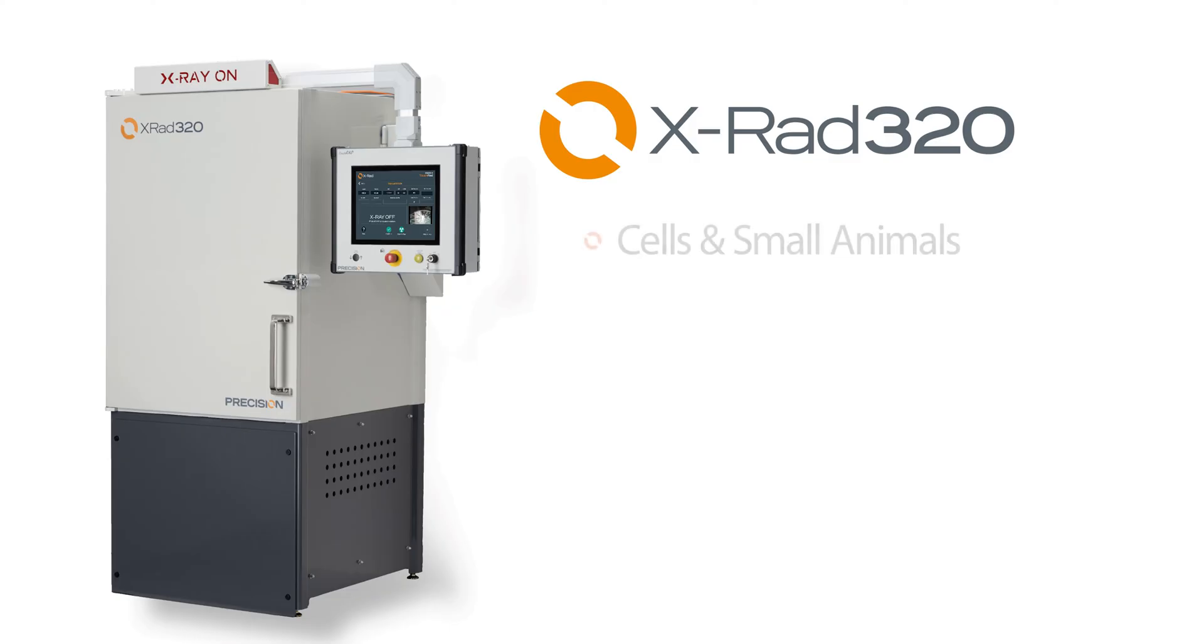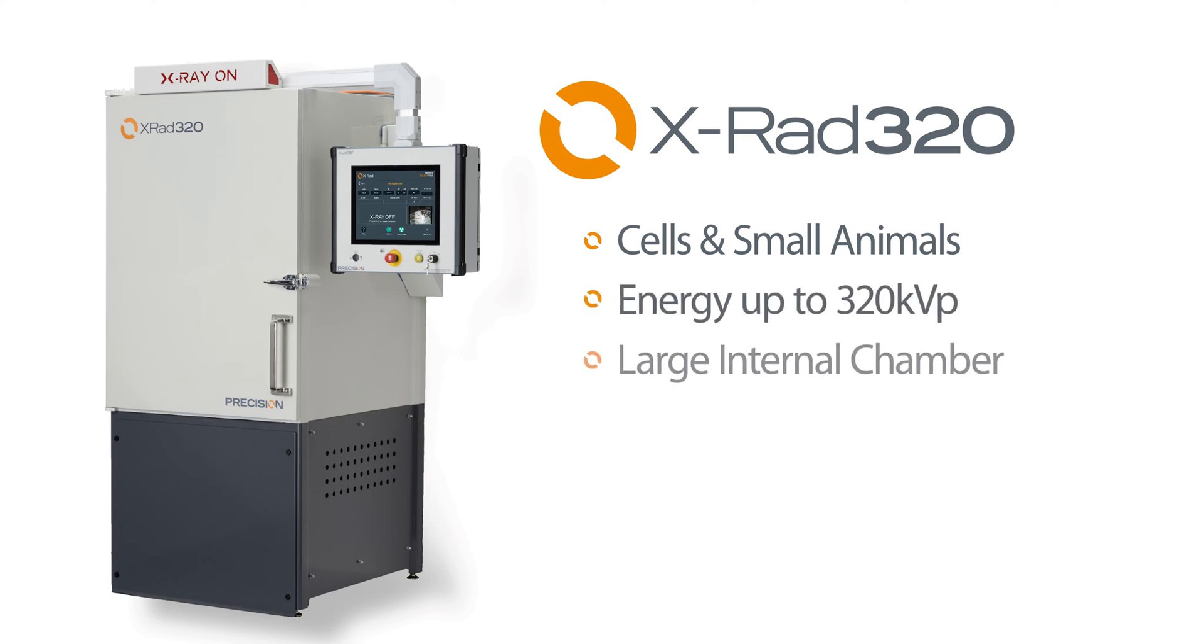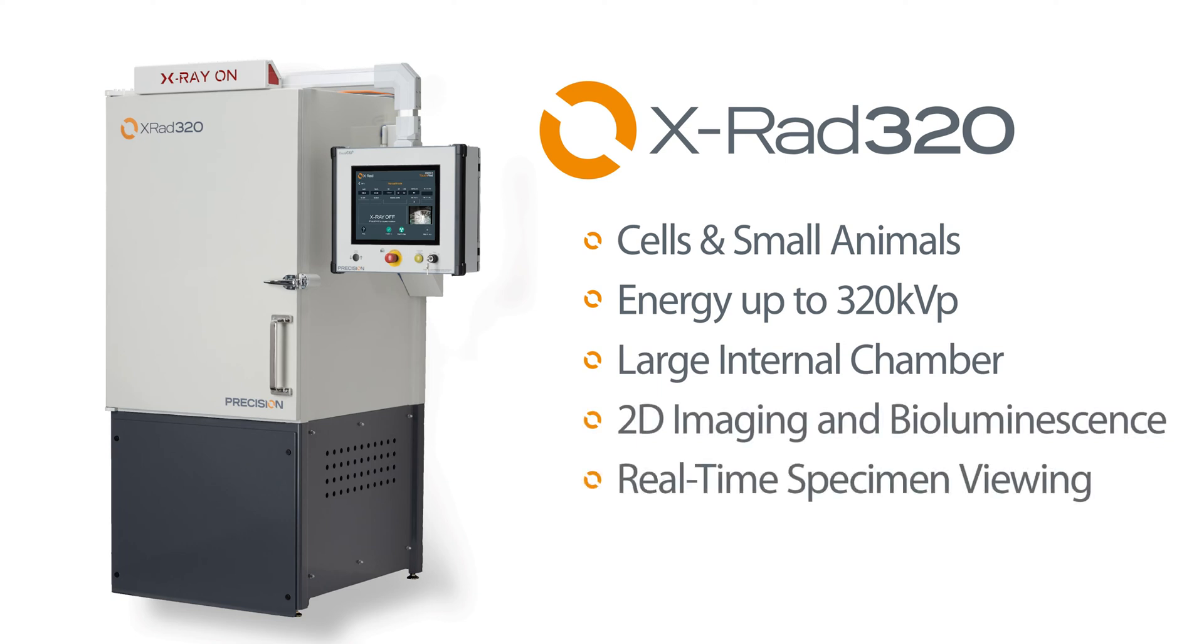From cells to small animals, the X-RAD 320 delivers a precise radiation dose with energy up to 320 kV. The large internal chamber increases throughput of cell plates, tissue samples, and small animals, while the small footprint conserves precious lab space.